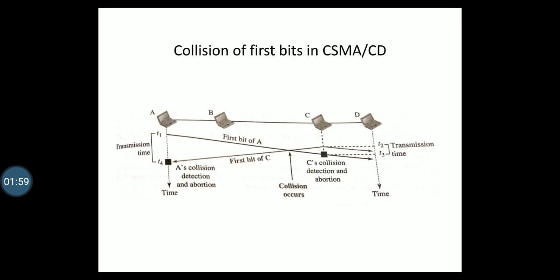Station A is at the leftmost part and D is at the rightmost part. At time T1, station A has executed its persistent procedure and starts sending the bits of its frame. At time T2, station C has not yet sensed the first bit sent by A. Station C executes its persistence procedure and starts sending bits of its frame, which propagate both to the left and to the right.